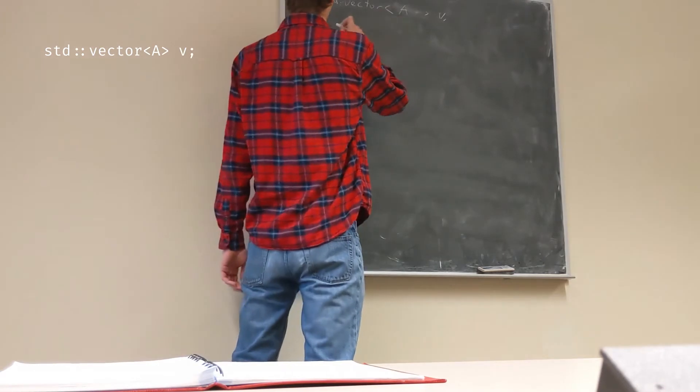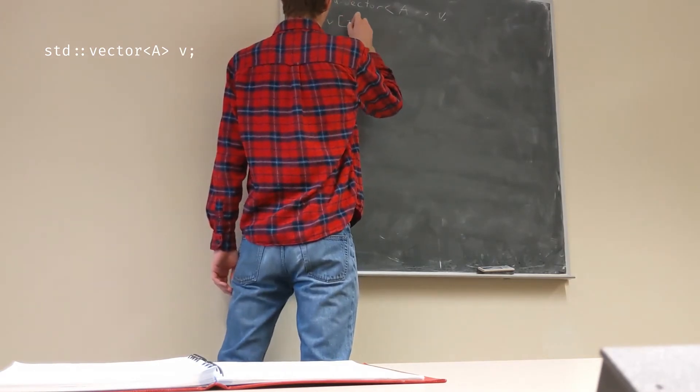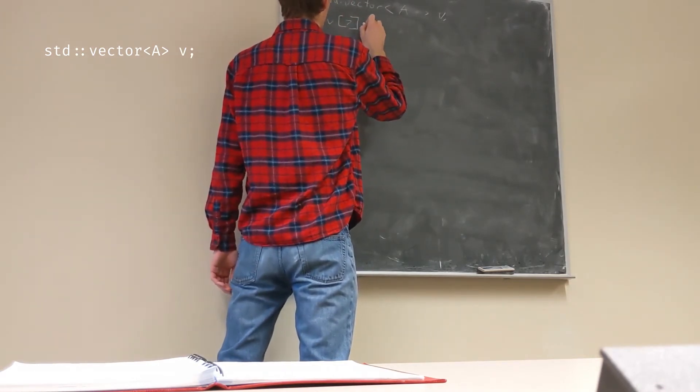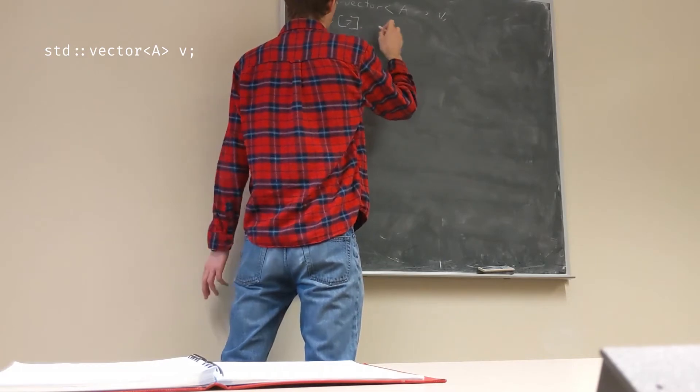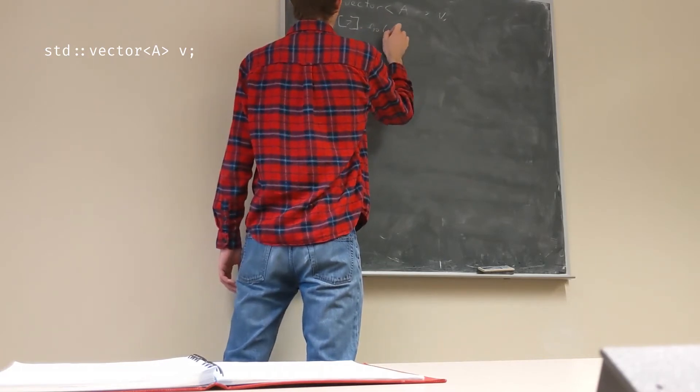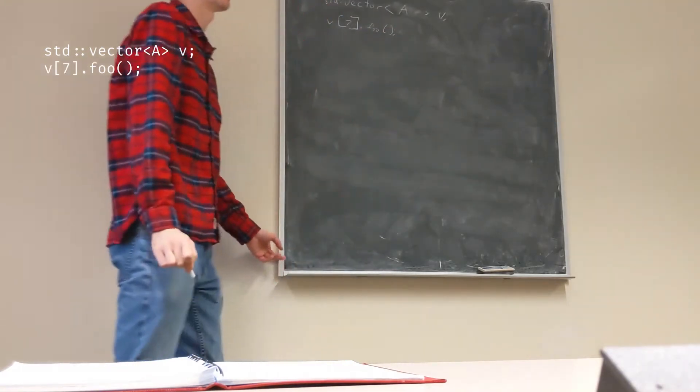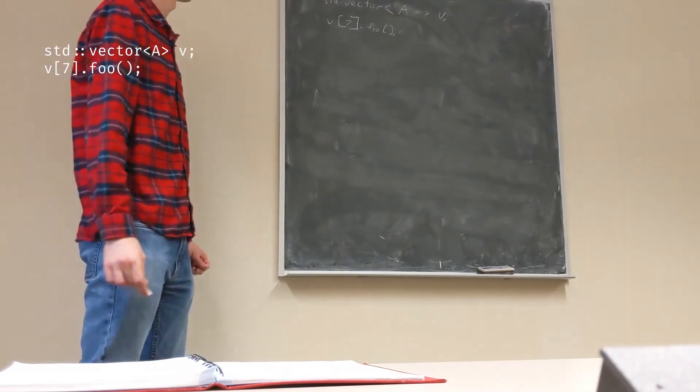And then, in this case, we could do V, like, index 7 dot foo. If foo is a method in A. Make sense?